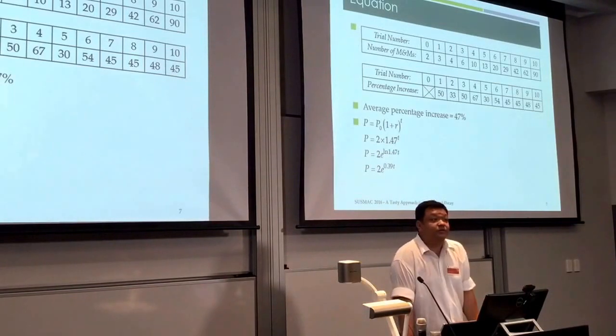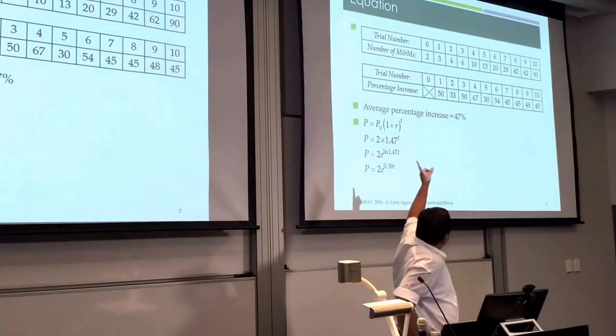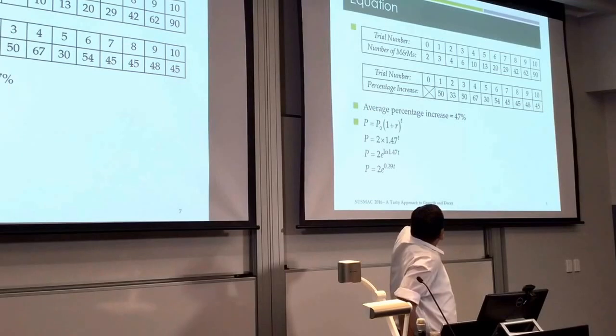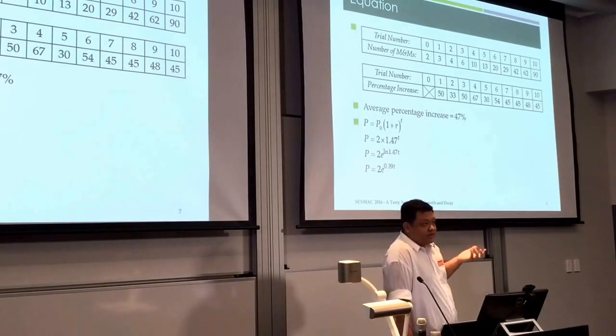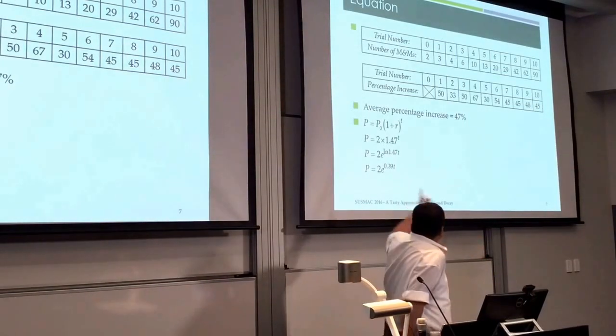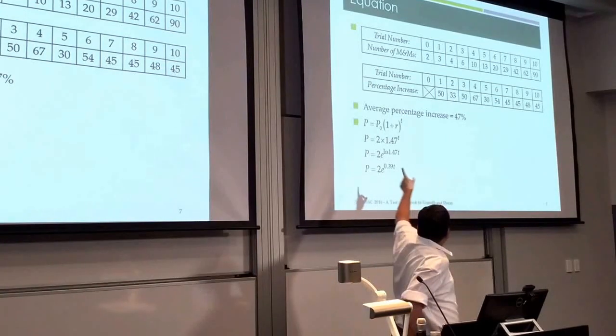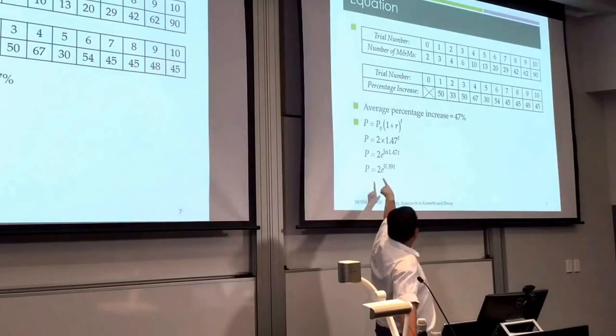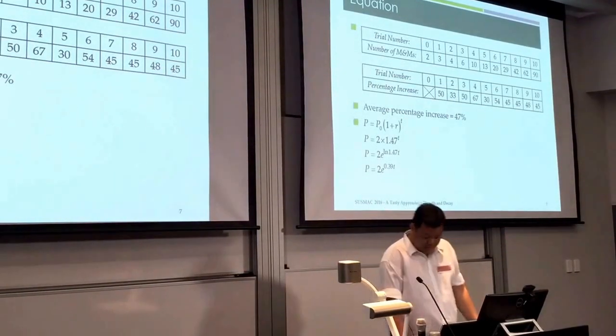I'm a little bit old school so I like to do the equation by hand. You've recorded the number of M&Ms on the plate at the top table there. Essentially I'm using the compound interest formula working out percentage increase, averaging it all out and working out this equation here to the power of 0.39t just by hand.